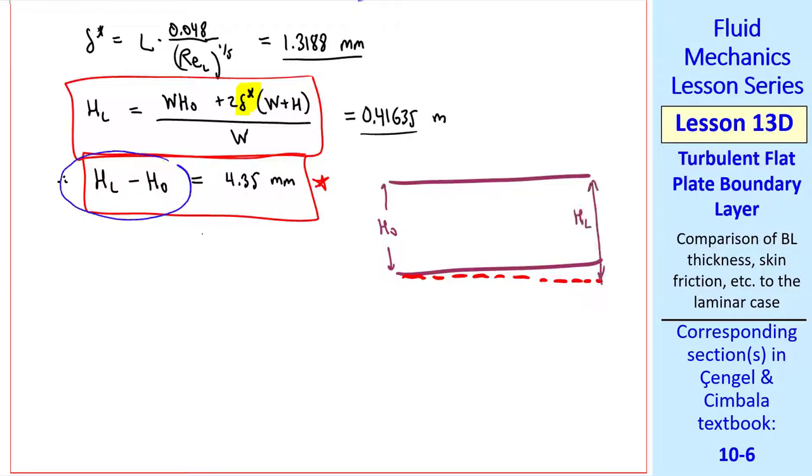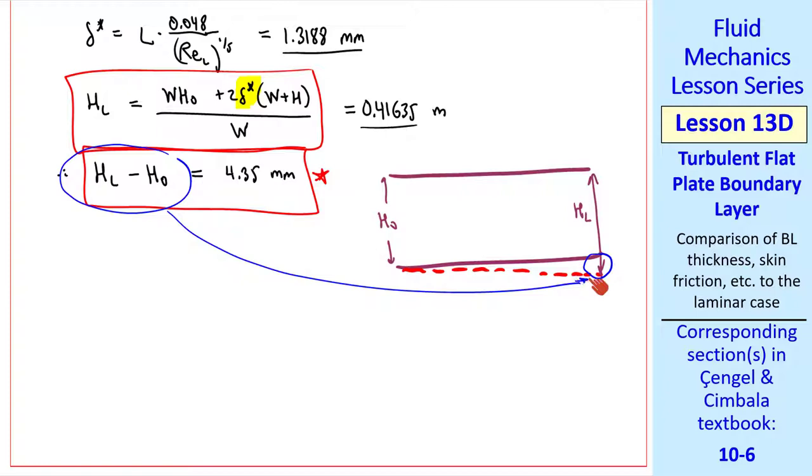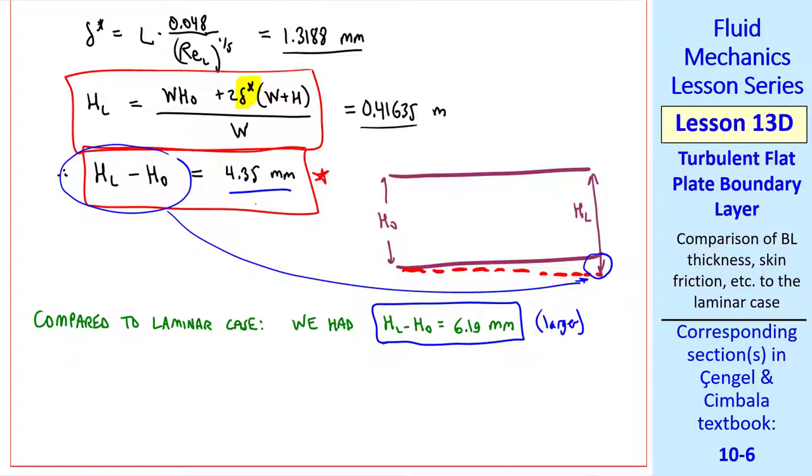As you recall, this difference is the difference in height after we tilt the bottom wall to account for the displacement thickness effects. I'll end by comparing to the laminar case. We had HL minus H0 equals 6.19 millimeters for that case, which is larger than our present value of 4.35 millimeters. The alert viewer may be questioning why, because I said that turbulent boundary layers are much thicker than laminar ones. But that's true when the Reynolds numbers are the same. Here our Reynolds number is roughly 10 times larger, and quantities like delta, delta star, CF, etc. go down as Reynolds number increases. In other words, the faster the flow, the thinner the boundary layer. In this example problem, that's true even though the present boundary layer is turbulent, while the previous one was laminar.